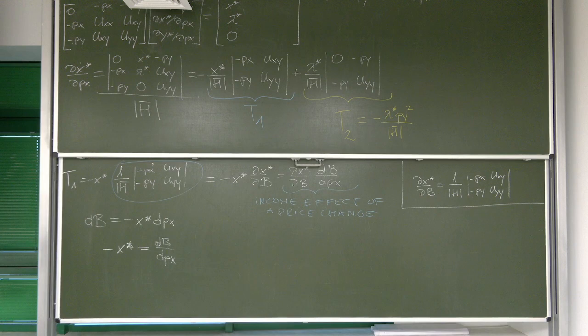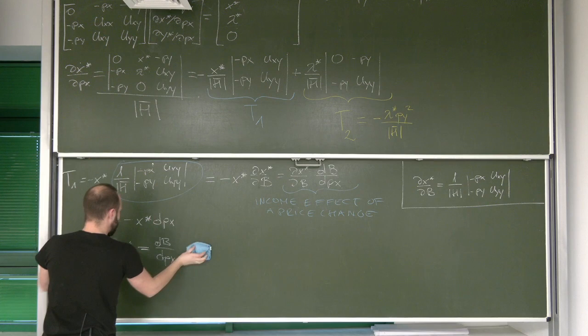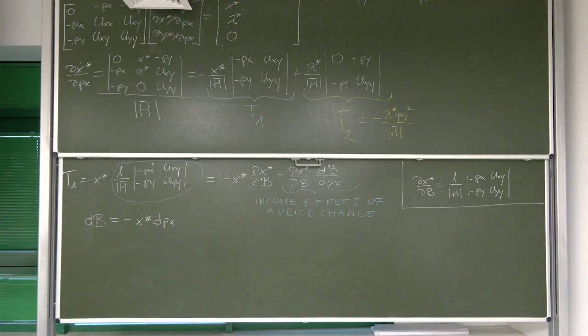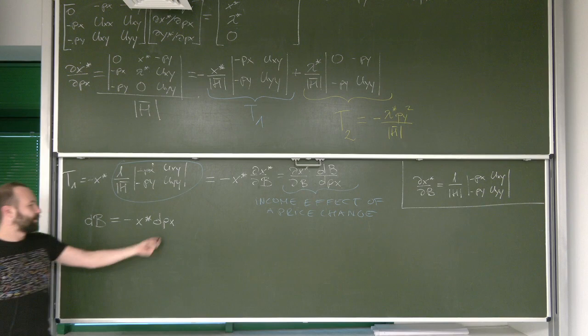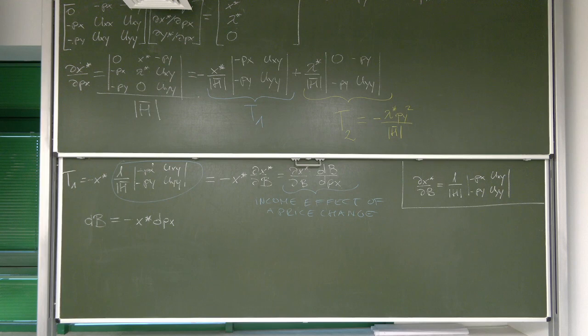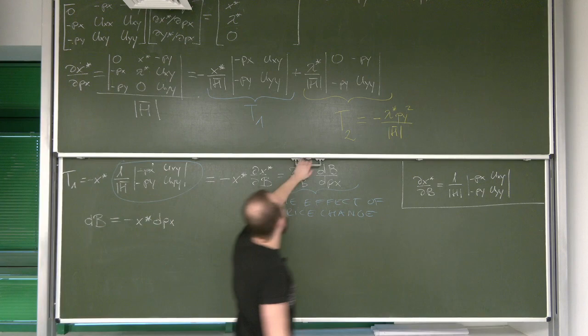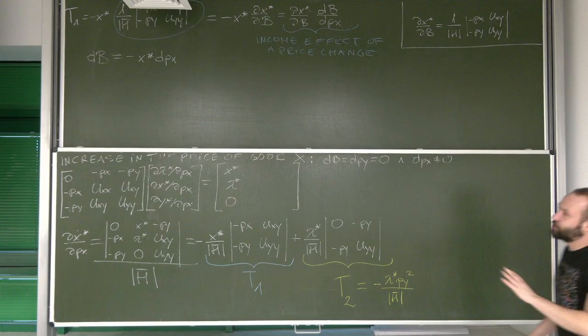So we can see how this channel works: change in price of good X influences our budget, and then the budget has an impact on the quantity purchased of good X. This is what we would call the income effect of a price change.